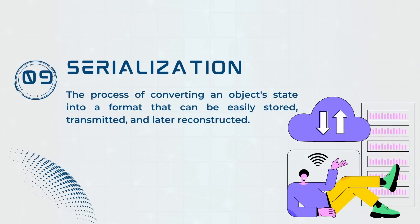Next is serialization, which basically means the process of converting an object's state into a format that can be easily stored, transmitted, or reconstructed. It involves transforming complex data structures or objects into a stream of bytes or a string representation that can be saved to a file. The same serialized data can also be deserialized — the reverse process of reconstructing the object. Common serialization formats include JSON, XML, and MessagePack, each with advantages depending on the use case.